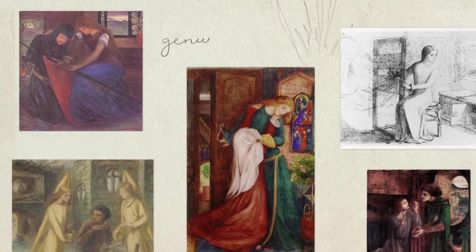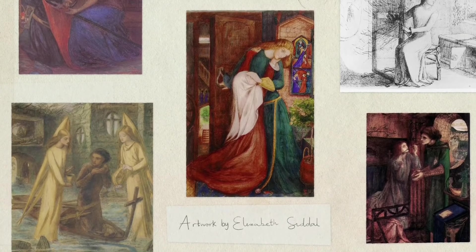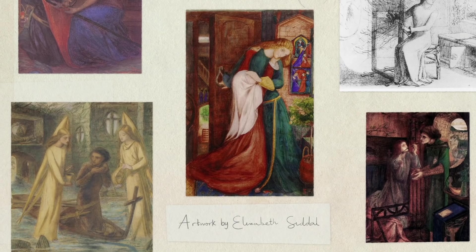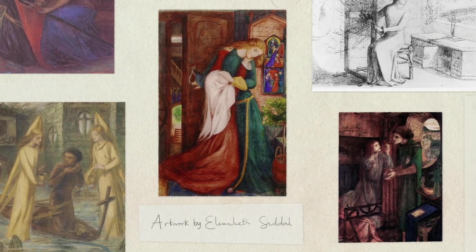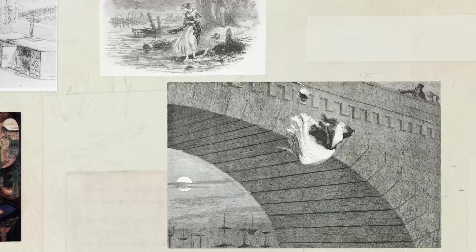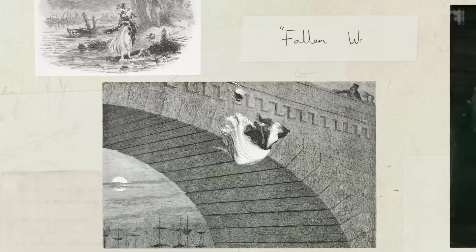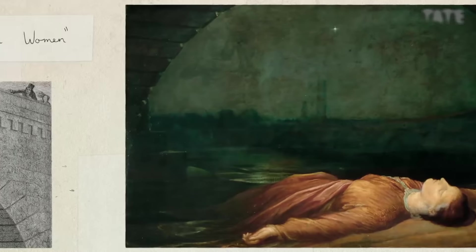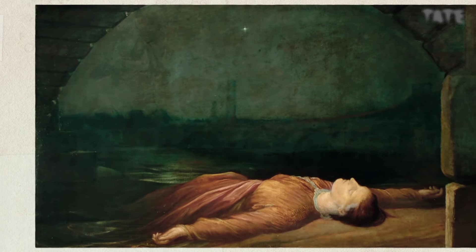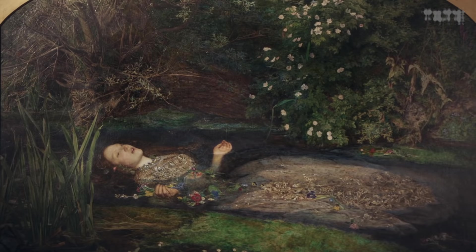Women artists did not have the same access to models as men did, so she painted herself. Victorian society looked down upon working women, especially artists and models. Warnings of what might happen to these women appeared in popular culture. They were depicted as fallen women who often came to tragic ends, frequently drowning in a polluted river. Millais saw a parallel between these images and Shakespeare's Ophelia, who is rejected after Hamlet accuses her falsely of being impure.